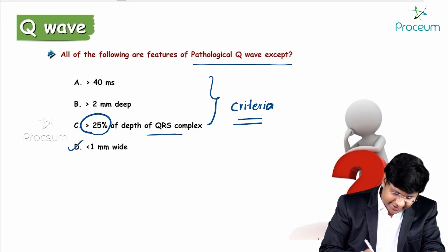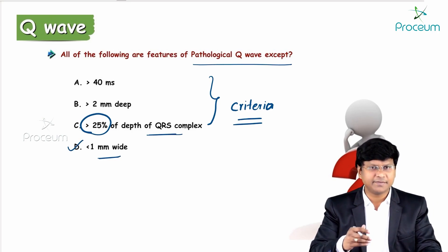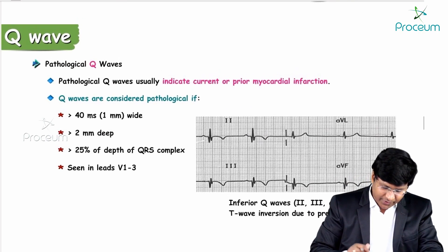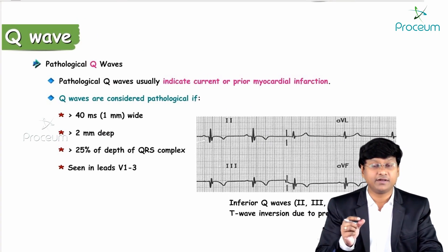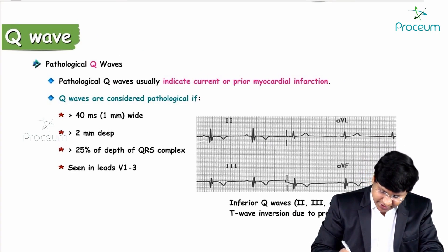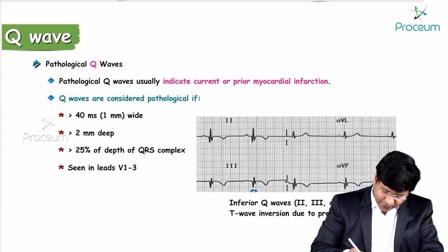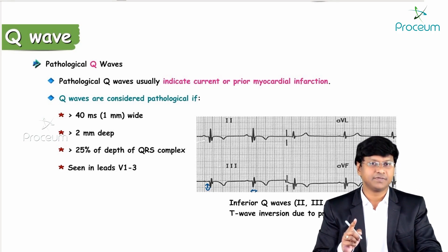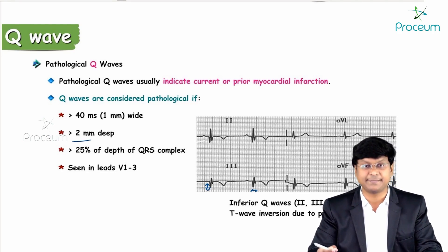Here is an ECG showing a pathological Q wave. The duration is more than one small box — more than 40 milliseconds wide. The depth is more than 2 mm, which is also considered a pathological Q wave.